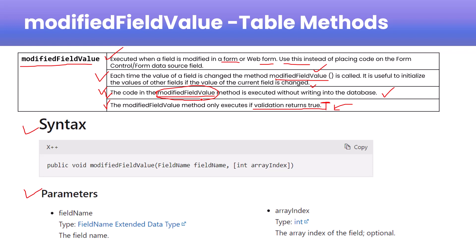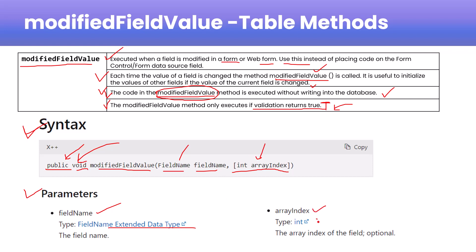Now let's discuss the syntax. This is a public method and it returns void — meaning it returns nothing; it will change field values but not return a value. The parameter is fieldName, which is an extended data type, and arrayIndex, which is optional and of type integer. The arrayIndex is the index of the field and is optional, but fieldName is required.